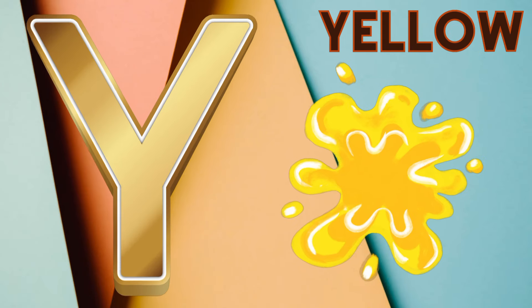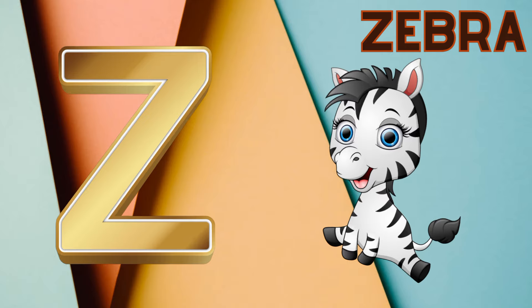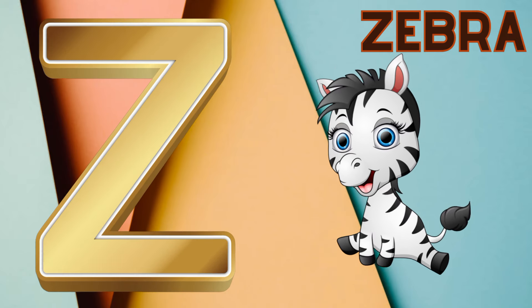Y is for yellow, y-y-yellow. Z is for zebra, z-z-zebra.